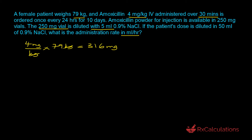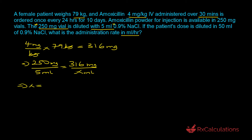Now, how much volume would provide that amount of drug? This is based on the reconstituted powder, because amoxicillin comes as a dry powder for injection and must be reconstituted into a true solution before giving it to the patient. We have 250 milligrams of powder diluted with 5 milliliters of solution, meaning 250 milligrams in every 5 milliliters. To supply 316 milligrams, we solve for x: x = (5 mL × 316 mg) / 250 mg = 6.32 milliliters.